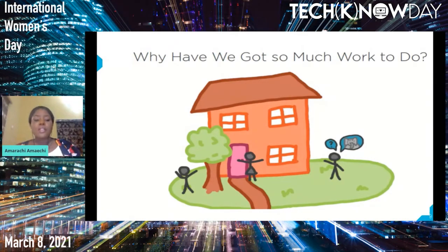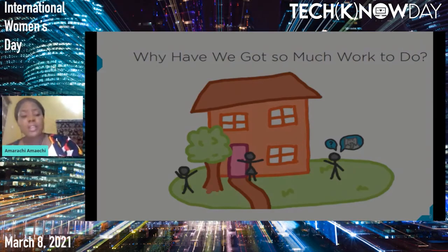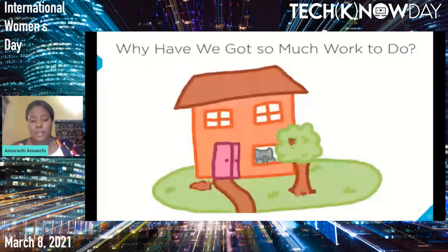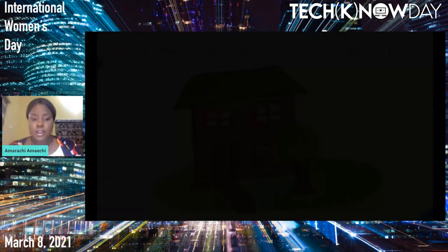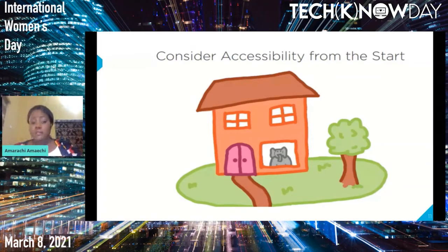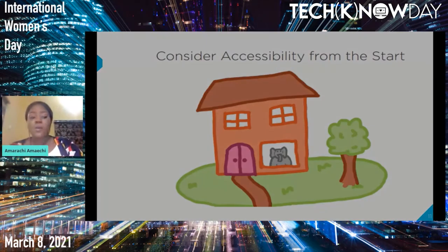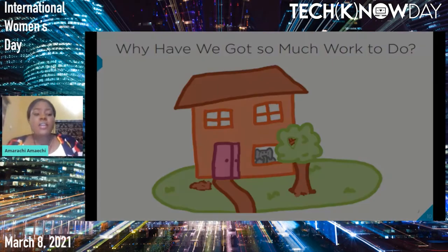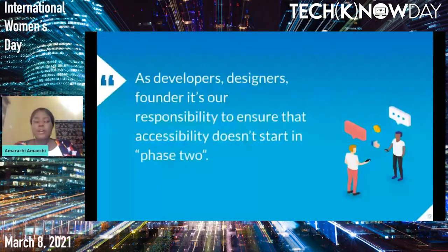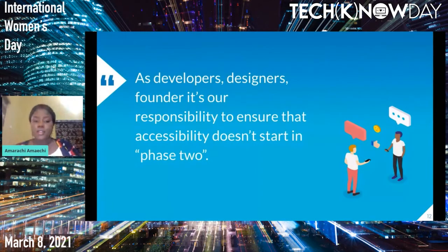They thought of alternatives to help the elephant move in with them. What they ended up doing was moving a tree and breaking the door open to expand it. What would have happened if this family had considered accessibility from the start? The layout would have been completely different. The difference between building with and without accessibility in mind is clear. Whether you're a developer, designer, or founder, it's our responsibility to ensure accessibility starts from the onset of a project — not in phase two.